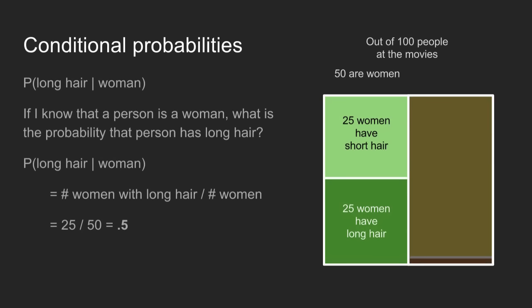Now Bayes' theorem is a little bit tricky. To be very precise, we're going to have to talk math. If you bear with me for just three probability concepts, we'll lay the foundation for presenting Bayes' theorem. The first one is conditional probabilities. If I know that a person is a woman — that's the condition — what's the probability that person has long hair? It's written as: probability of long hair given that a person is a woman.